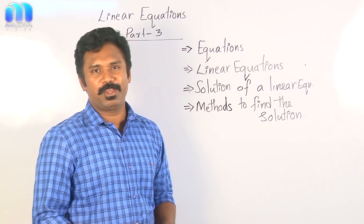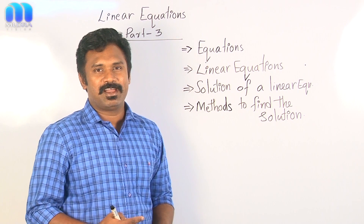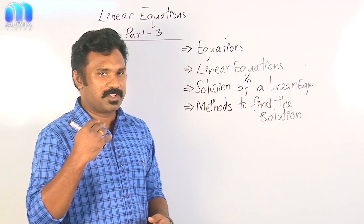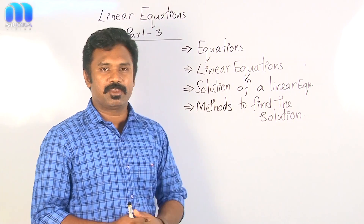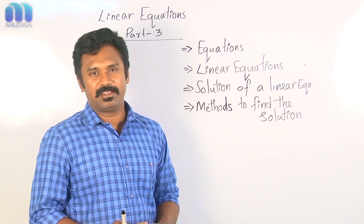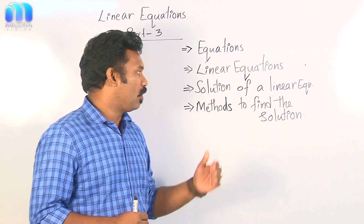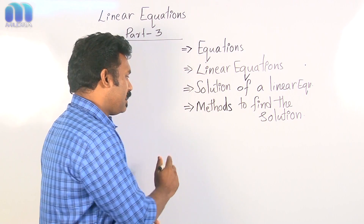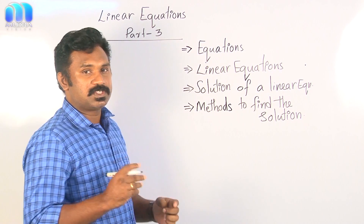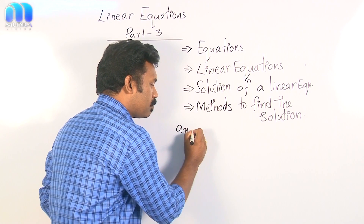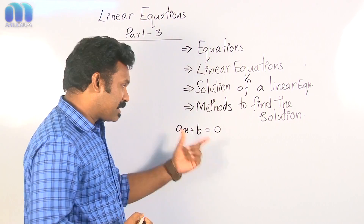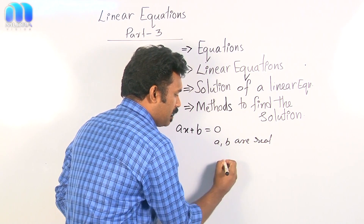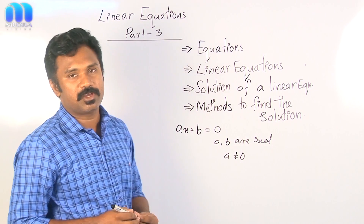First, what do you mean by an equation? An equation is an expression with an equal sign — that we discussed in the first class. Second is linear equation. An equation with a variable is called an algebraic equation. Such equations with only one variable and power of the variable 1 is called a linear equation. The standard form of a linear equation is Ax plus B equal to 0, where A and B are real numbers and A cannot be 0.